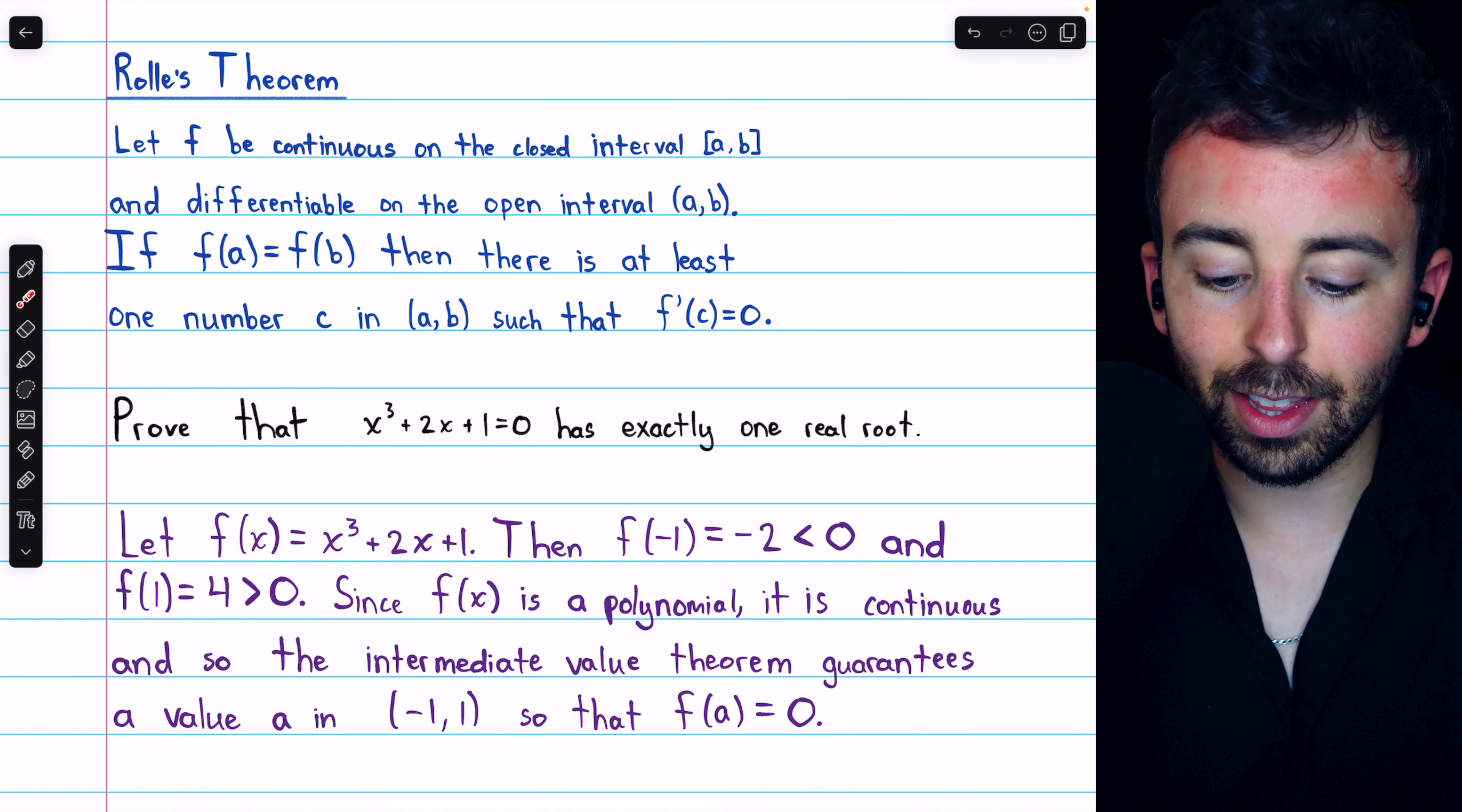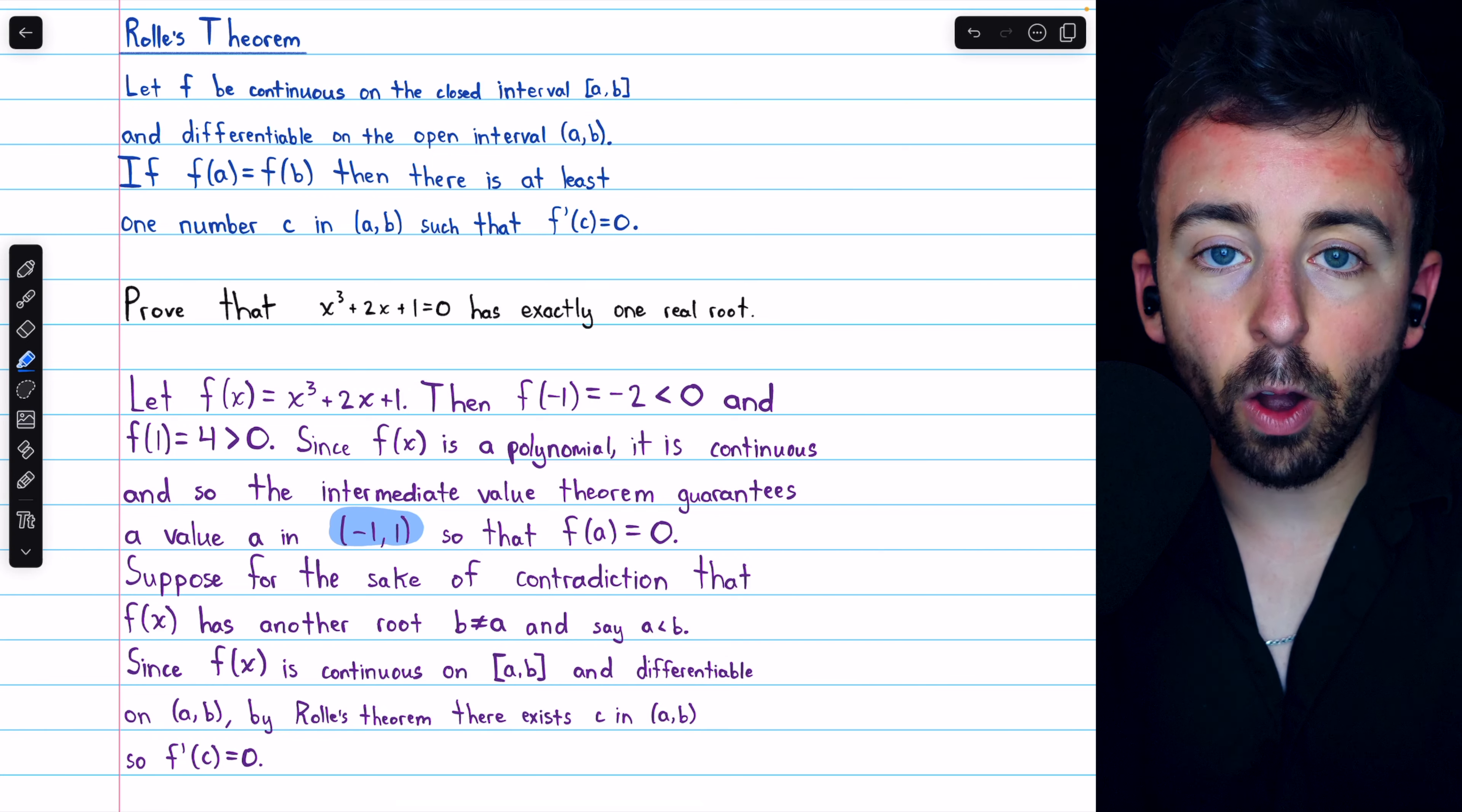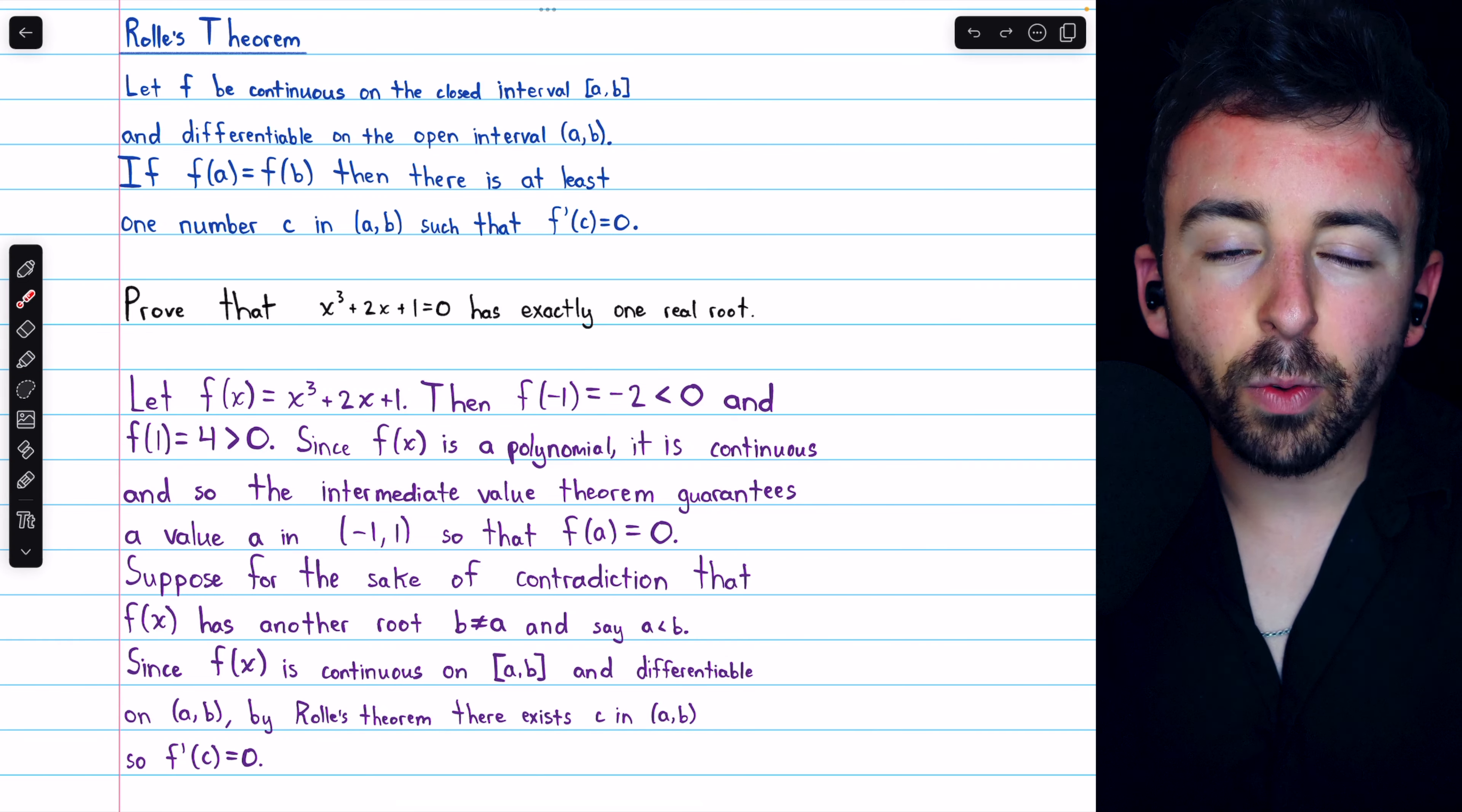So we've proven that this equation does have at least one root. Now we can use Rolle's theorem to rule out the possibility of any other roots. And let me clarify, the only importance of negative one and positive one in this open interval is that over that interval, the function passes from negative to positive. Any other interval where that held true would also work for this proof.